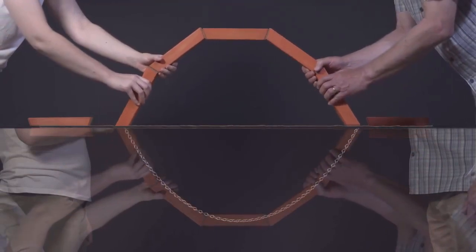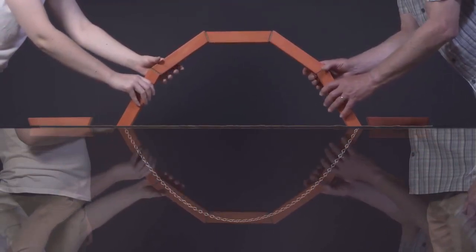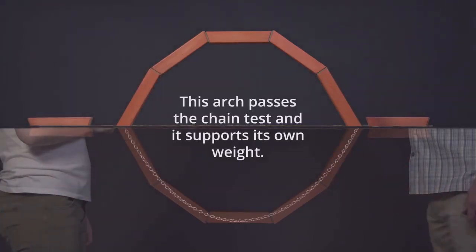Another solution would be to change the shape of the arch so that it follows the chain shape. For this arch, we could do that by tilting the bottom pieces of the arch outwards. As you can see, when the arch shape follows the chain, it stands up just fine.